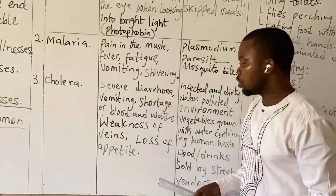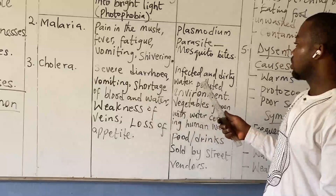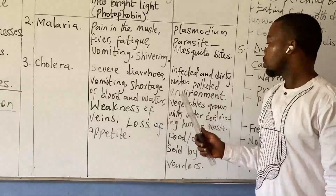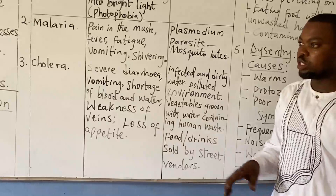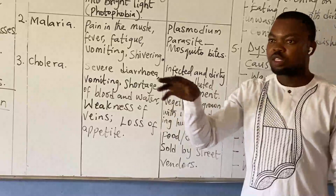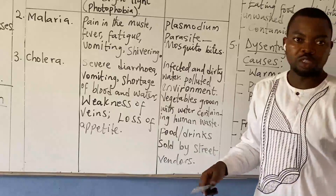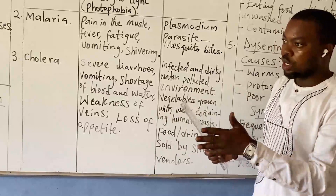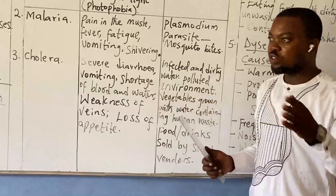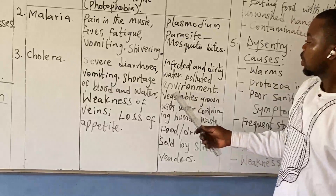There is no urge to eat the food. What are the causes of this cholera? Causes include infected and dirty water, polluted environment. Those who live in polluted environments, especially where we dump refuse — we collect waste from homes and deposit it. If it is around where people live, it can cause a cholera outbreak. That's why we are always told to pack the refuse and deposit it very far in the bushes or far from settled homes.